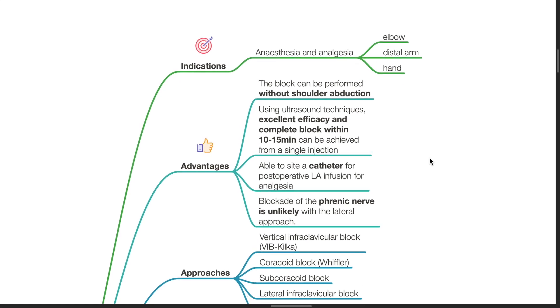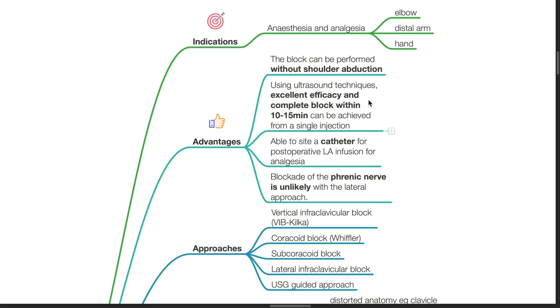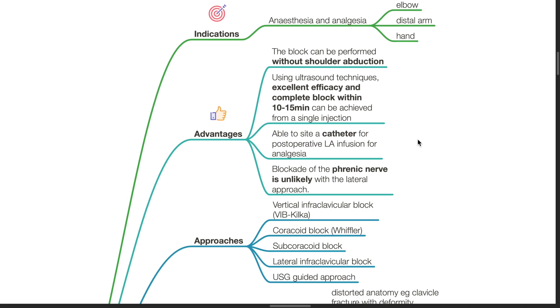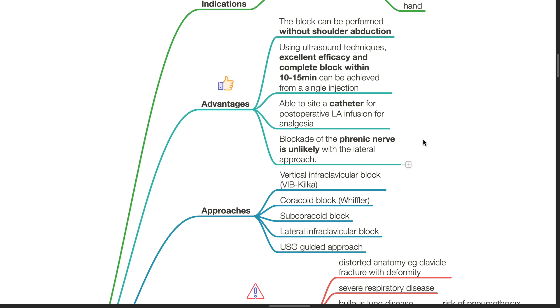Advantages include this block can be performed without shoulder abduction. Using ultrasound techniques, excellent efficacy and complete block within 10 to 15 minutes can be achieved from a single injection. Ability to site a catheter for postoperative local anesthetic infusion for analgesia. Blockade of the phrenic nerve is unlikely with the lateral approach.